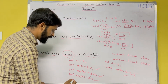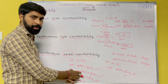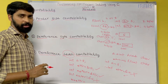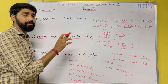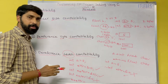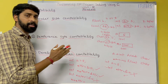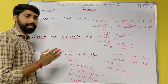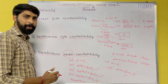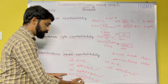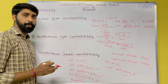So to summarize: pointer size compatibility means whatever the data type, the size of the pointer variable is the same. Dereference type compatibility means if the variable belongs to integer data type and you want to store its address in a pointer variable, you declare the pointer as integer only. Dereference level compatibility means a pointer-to-pointer can hold the address of a pointer only. I hope you all understand pointer compatibility.